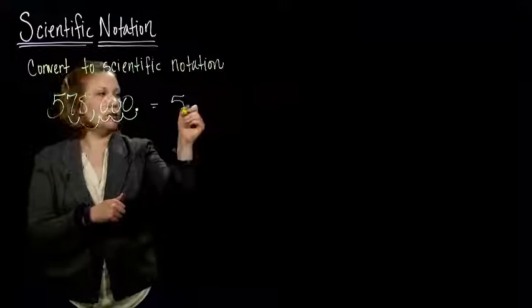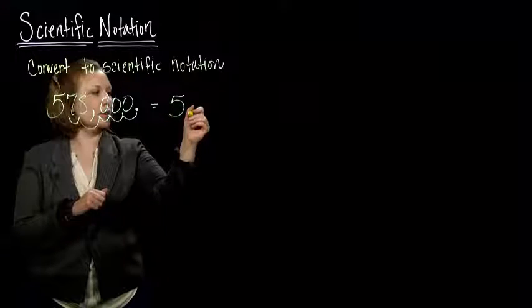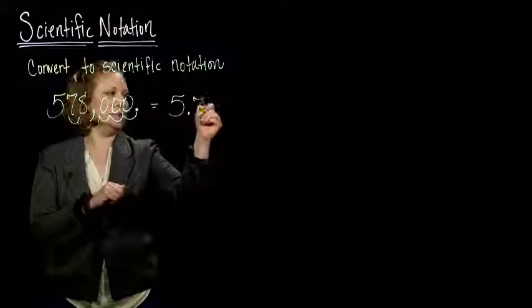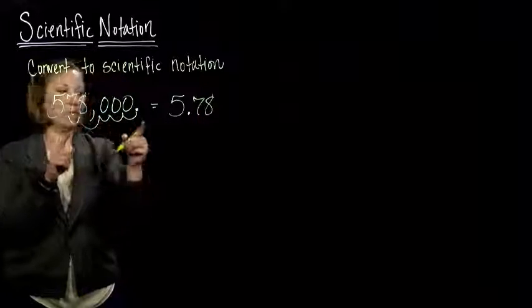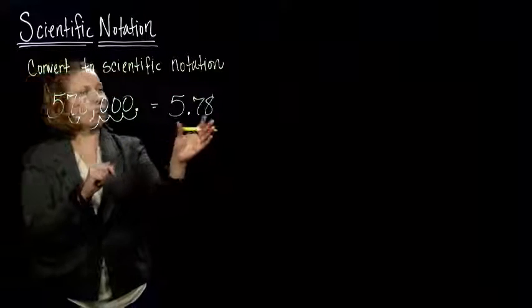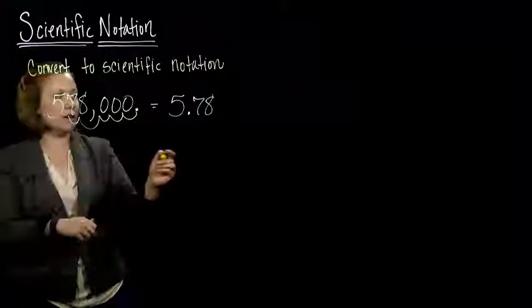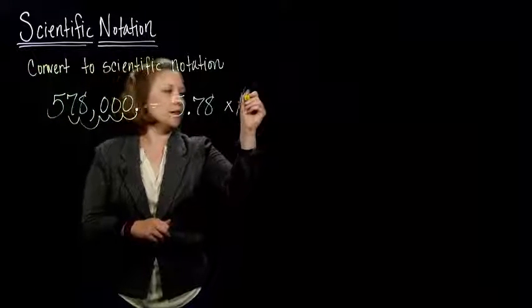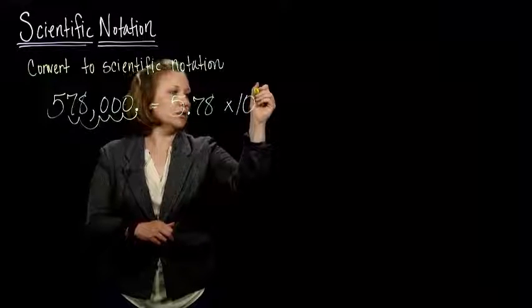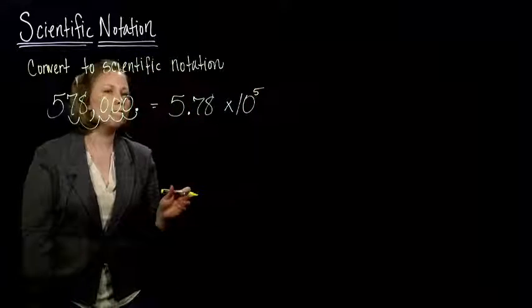So I know my decimal point is now going to go between the 5 and the 7, and I moved it 5 places. So we're writing a number that's equivalent to the number that I started with. So if I multiply this by 10 to the 5th power...